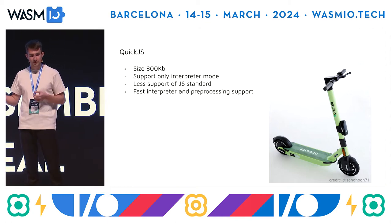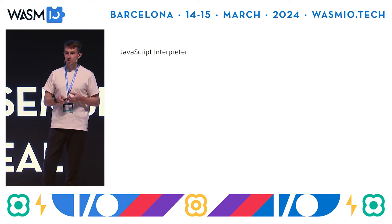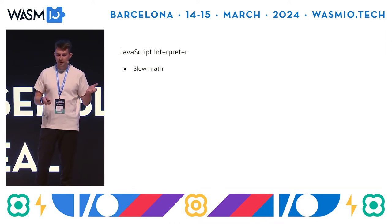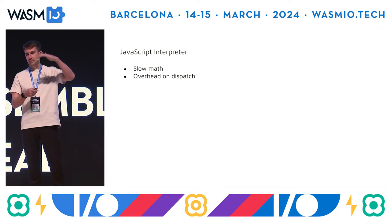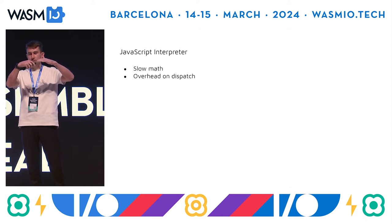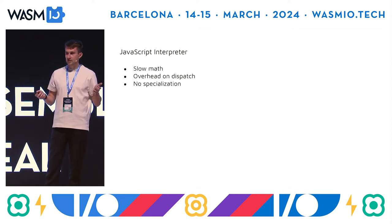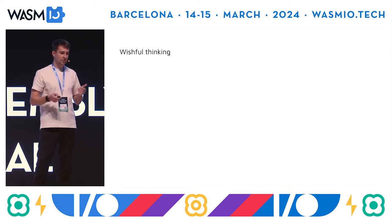There are several issues with JavaScript-only interpreters: they provide slow math, they have overhead on dispatch — all these interpreters are just switches in C++, so you need to dispatch on a dispatch block for every bytecode — and they have no specialization and therefore no optimizations.